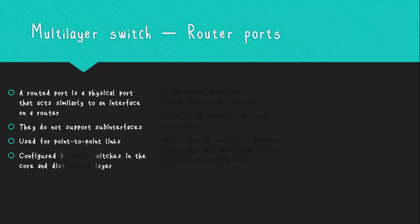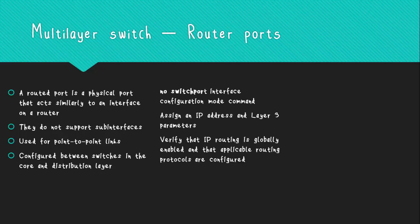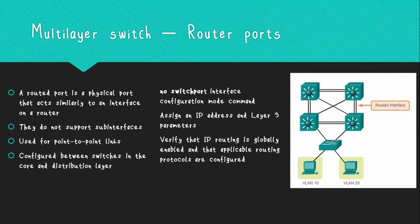Routed ports are used for point-to-point links such as connecting to a WAN router, and are configured between switches in the core and distribution layers. To configure a routed port, use the 'no switchport' command on the appropriate port, then assign an IP address and Layer 3 parameters as necessary. Finally, verify that IP routing is globally enabled and that applicable routing protocols are configured.